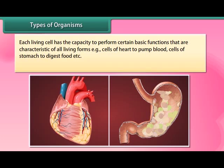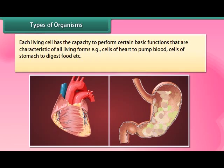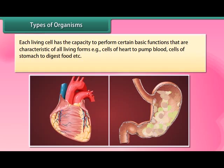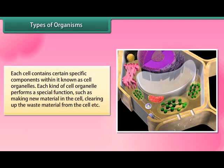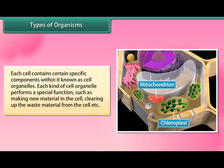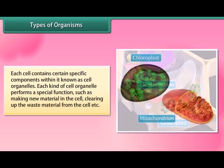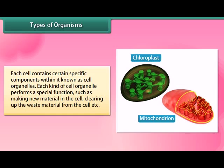Each living cell has the capacity to perform certain basic functions characteristic of all living forms — for example, cells of the heart pump blood and cells of the stomach digest food. Each cell contains certain specific components within it known as cell organelles, and each kind of cell organelle performs a special function, such as making new material in the cell or clearing up waste material from the cell.